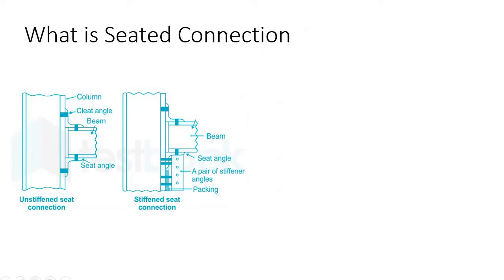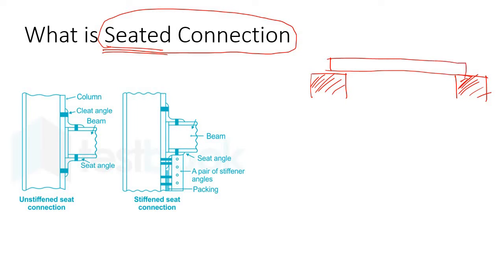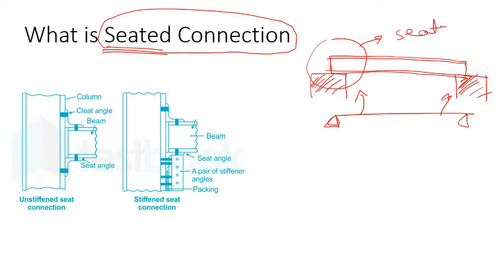What is a seated connection? A seated connection is one of the easiest connections in steel design. As the name suggests, it is 'seated' — meaning it simply sits over something. So let's say this is a support, and you have a beam over these two supports. It is simply a simply supported beam, and this connection is a seated connection. It is that simple — it simply sits over a support.